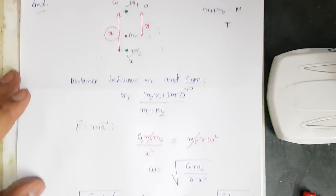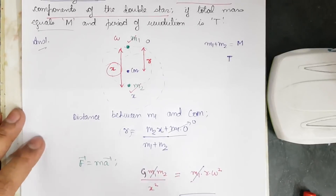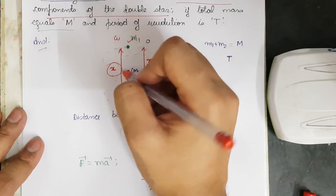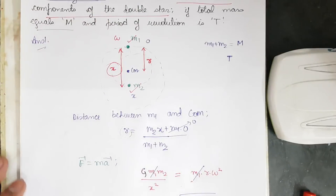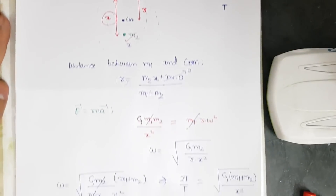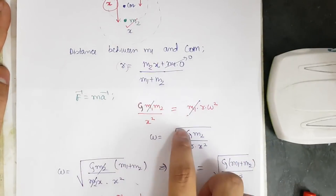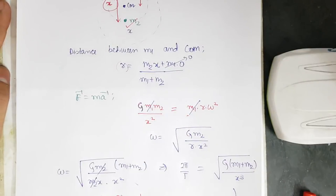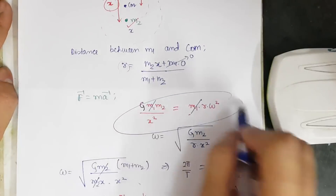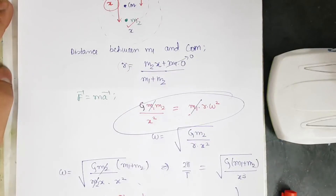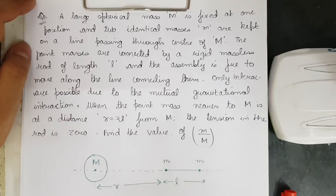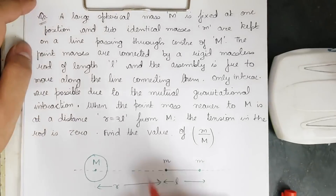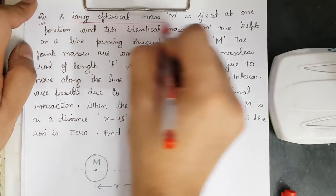This is how you solve the double star question where the distance between the two stars is asked. It is a very important question for JEE as well — a short question that uses only the basic gravitational law. Let us move on to the second question.